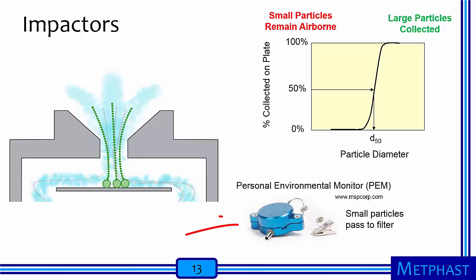The particle diameter for which 50% of the particles collect is often referred to as the particle cutoff diameter and used to describe impactor performance. The light blue personal environmental monitor is designed to collect particles smaller than 2.5 microns onto a filter after an impactor section that removes particles larger than 2.5 microns.